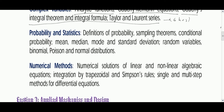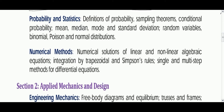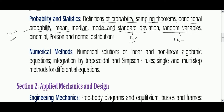Next comes Probability, which is a very confusing chapter for most students. The concepts won't take much time but it needs a lot of practice. Definitions of probability, sampling theorems, and conditional probability — including Bayes' theorem — I have given three hours for that. Mean, median, mode, standard deviation, and random variables can be covered in around two hours. Binomial, Poisson, and normal distributions are also very important and will take around two hours for completion.